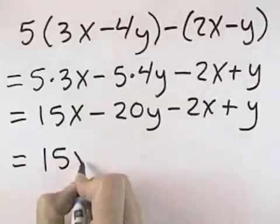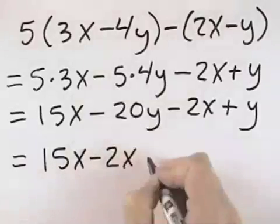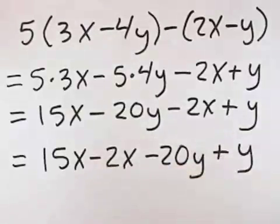So I will leave the 15x first, but now we have a negative 2x to subtract from that. Then we have negative 20y and a positive y to combine with that.